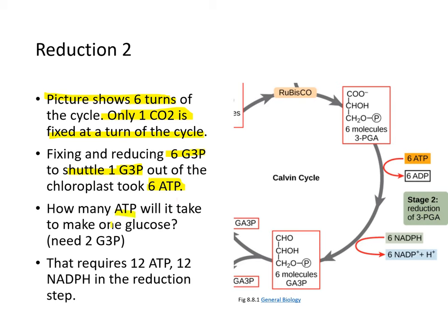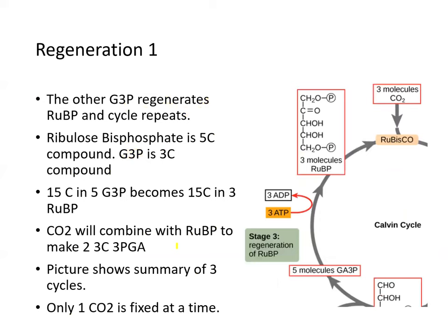How many ATP does it take? To make just one glucose, you need two G3P. So it takes 12 ATP and 12 NADPH just to produce one single molecule of sugar. The other G3P regenerates.